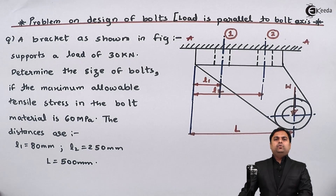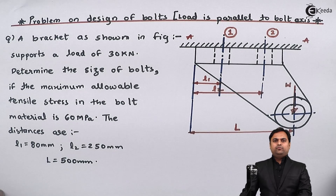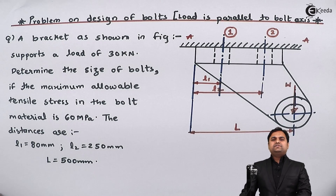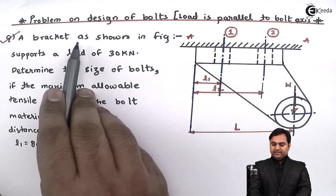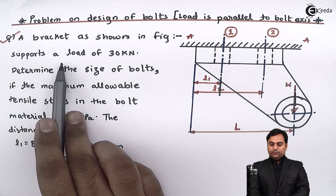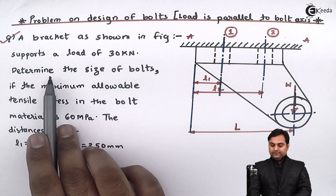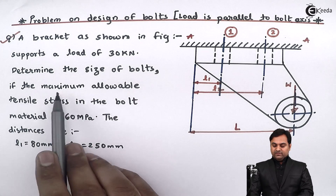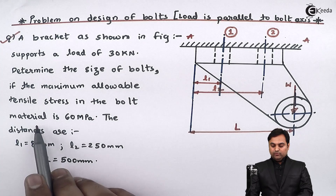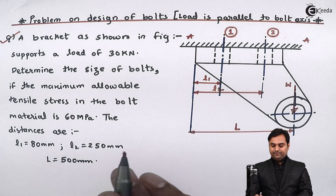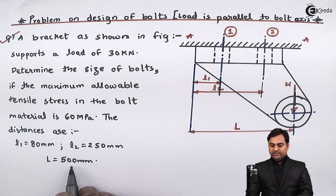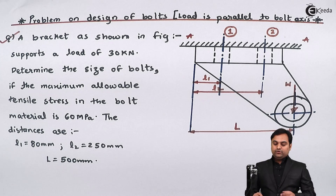Hello friends, in this video we will see a problem on design of bolts where the load is parallel to the bolt axis. We have a question: a bracket as shown in the figure supports a load of 30 kilo Newton. Determine the size of bolts if the maximum allowable tensile stress in the bolt material is 60 mega Pascal. The distances are l1 = 80 mm, l2 = 250 mm, and L = 500 mm.